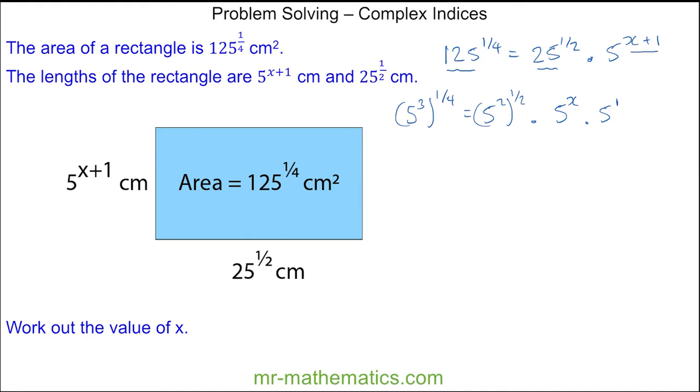Now I can use the power rule and multiply the 3 by the quarter. So I get 5 to the power of 3 quarters is equal to, and again, I'll use the power rule here, 5 to the power of 1, which is 2 times 1 half, multiplied by 5 to the x, multiplied by 5 to the 1.